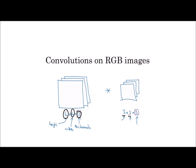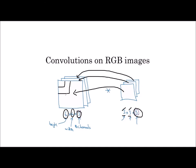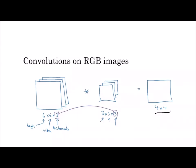We consider a filter with a 3 by 3 kernel size, and this filter also has three channels. The first channel of the filter is applied to the first channel of the input image, the second to the second, and the third to the third. After convolution for a particular pixel, we multiply the image patch values with the filter, sum them, and get a single value per channel. We then add all channel information to get the feature map — a 4 by 4 output with only one channel.